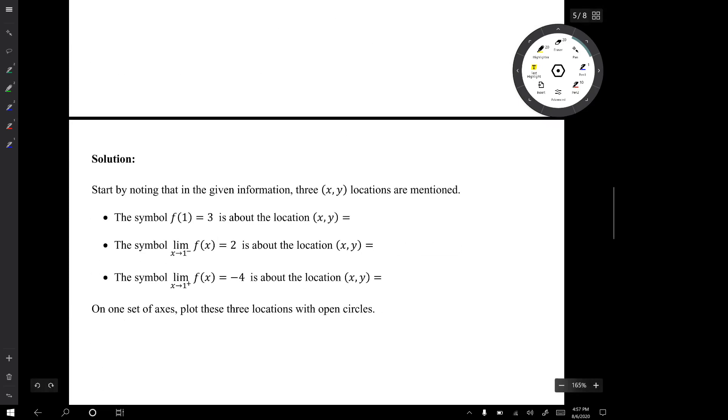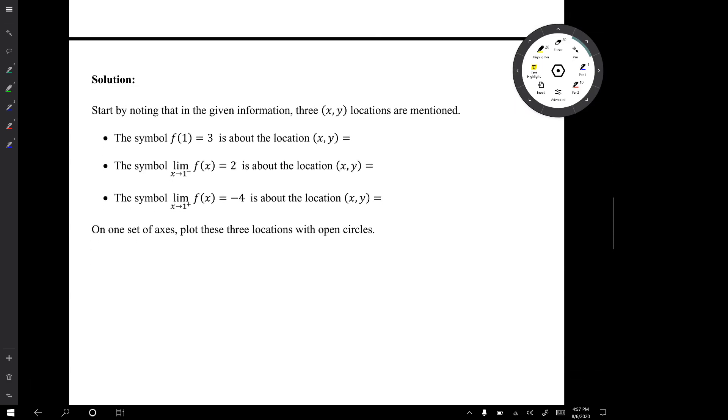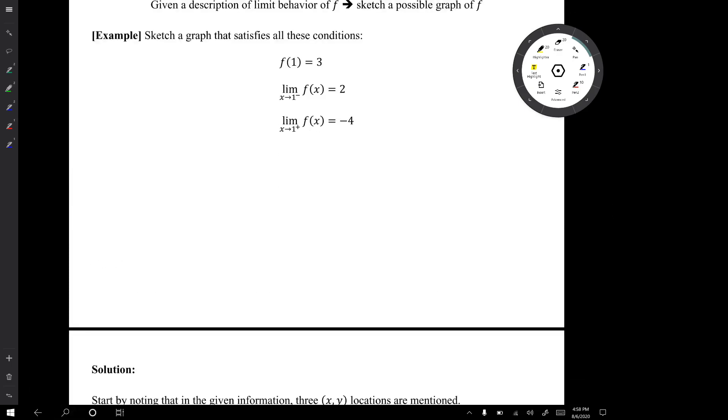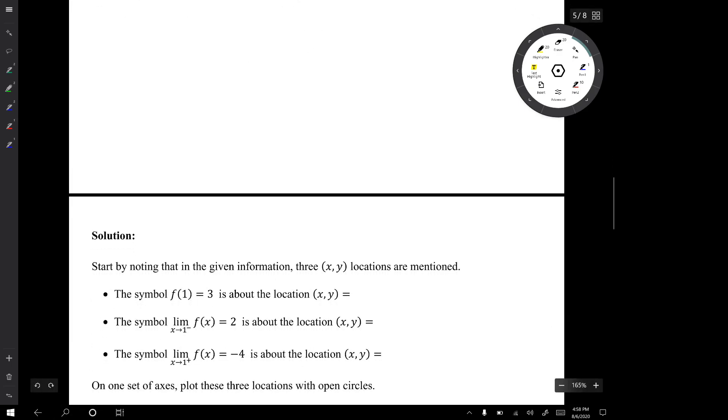Well we start by noticing that in the given information three x-y locations are mentioned. Just locations. So this symbol that we are given f(1) equals 3. Well that's about the location (1, 3). In this symbol that number 1 is an x value. That number 3 is a resulting y value.